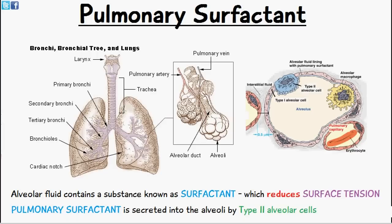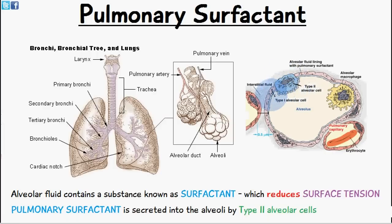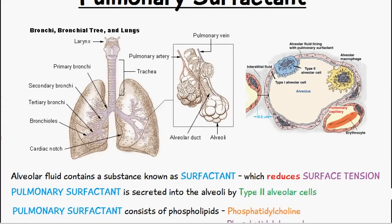The alveoli are lined with fluid, and this fluid contains a substance known as pulmonary surfactant. The role of pulmonary surfactant is to reduce surface tension. It is secreted into the alveoli by type 2 alveolar cells, also known as type 2 pneumocytes or great alveolar cells, which you can see in the diagram here. Type 1 alveolar cells and an alveolar macrophage are also visible here.